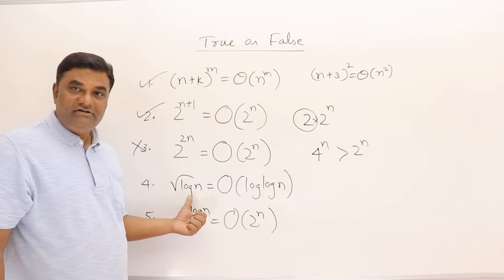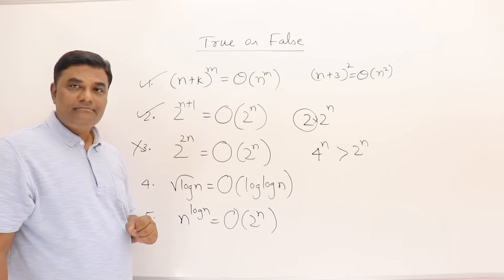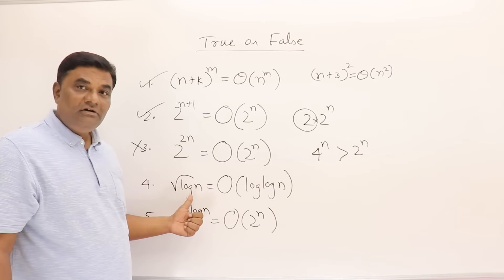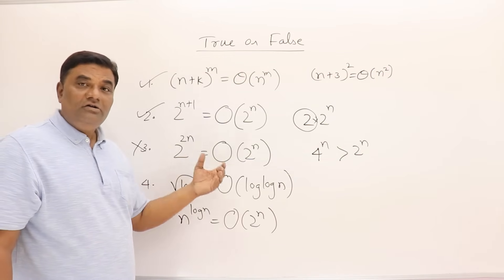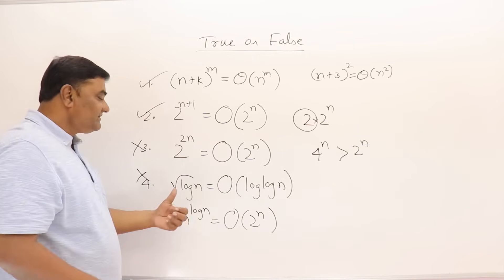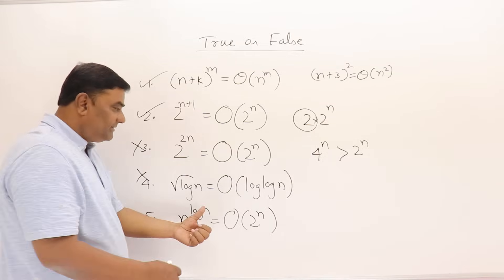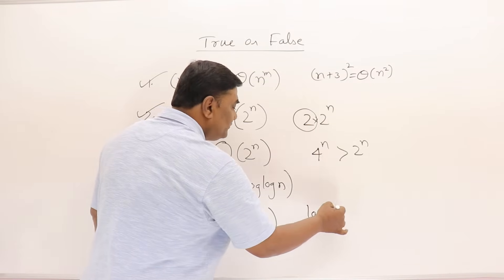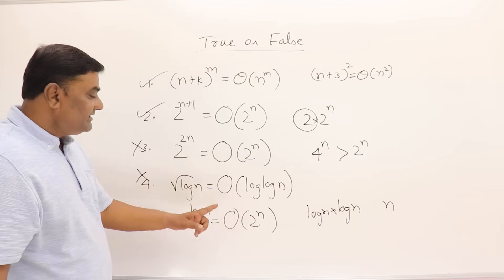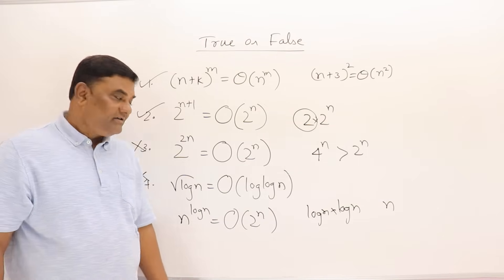Next: √(log n) vs log(log n) — which is the upper bound? Applying log to both sides gives (1/2)·log(log n) vs log(log(log n)). The right side is even smaller, so log(log n) cannot be an upper bound for √(log n); that statement is false. Finally: log²n = O(n). Applying log gives log(log n)·2 vs log n — since n is greater, log²n is indeed O(n). This is correct.